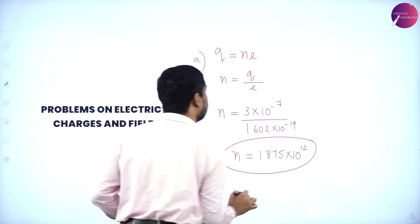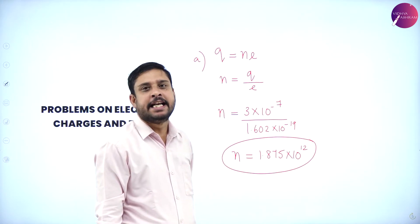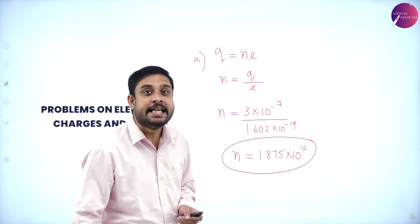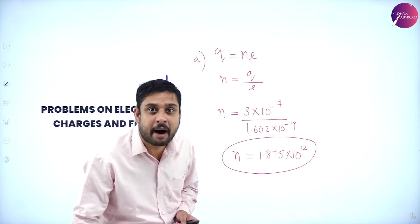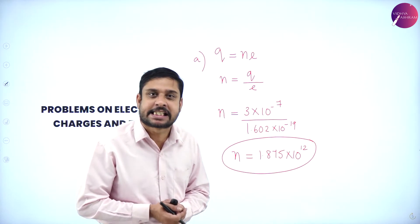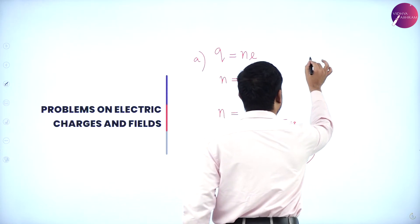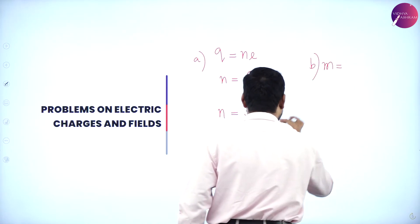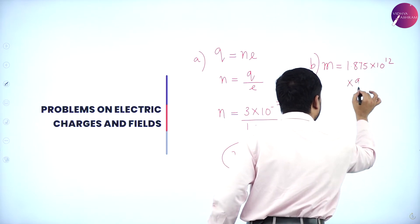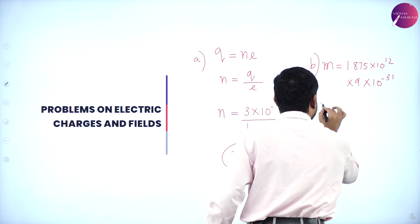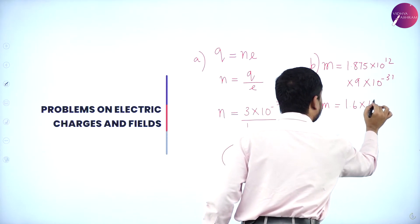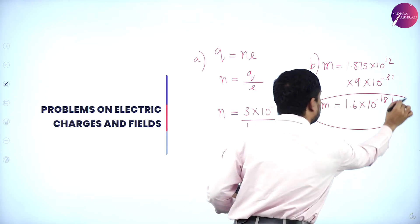My next argument is, is there a transfer of mass here? Very much yes, conservation of mass has to happen. So mass is transferred. How much? We know M equals how many electrons are transferred, 1.875 into 10 power 12, into what is the mass of each electron, 9 into 10 power minus 31. So we have 1.6 into 10 power minus 18 kilograms. So so much of mass is transferred during the process.